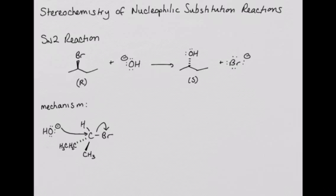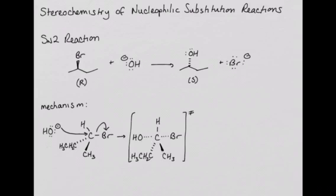Remember that the SN2 mechanism occurs in one step, with the bond between the nucleophile and the electrophilic carbon forming as the bond between that carbon and the leaving group breaks. This means that in the transition state, the hydroxide is forming a bond to carbon while the bond to bromine is breaking.